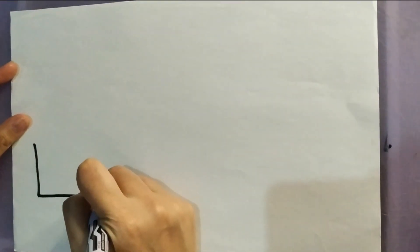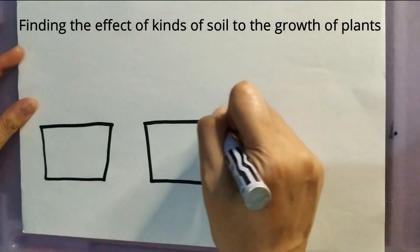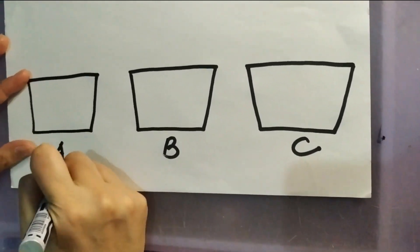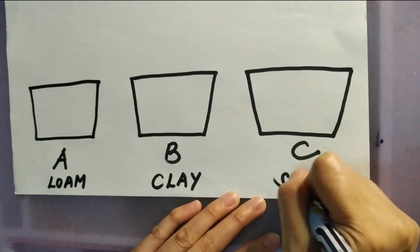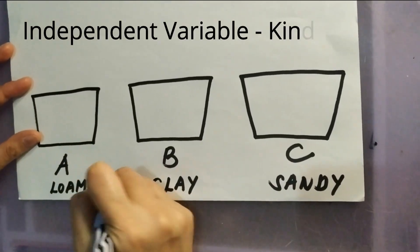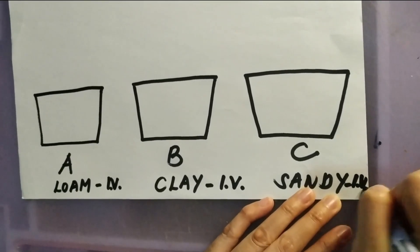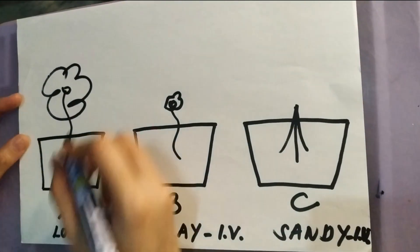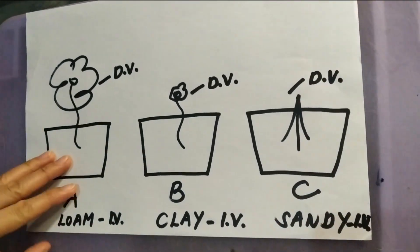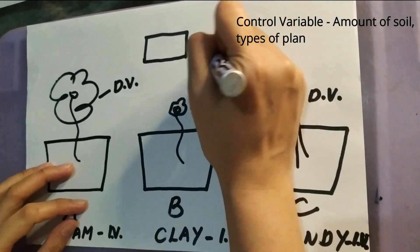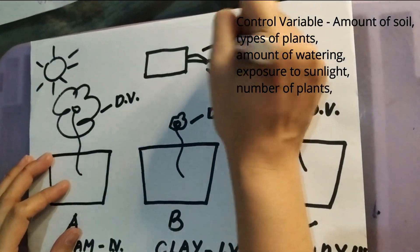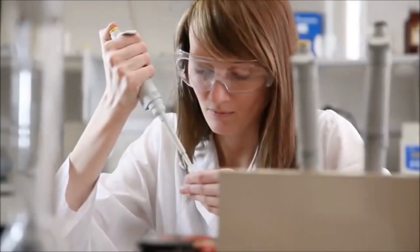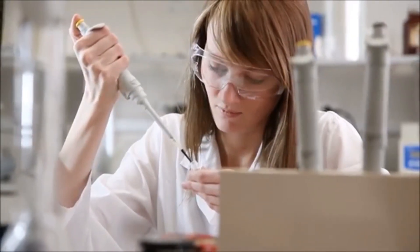For example, our problem is finding the effect of kinds of soil on the growth of plants. In our experiment, we will use three setups: A for loam soil, B for clay soil, and C for sandy soil. These are the independent variables because they are the factors we change to test the experiment. The growth of the plant is the dependent variable, or responding variable, because it is the effect of the change in the independent variable. The amount of water, same exposure to sunlight, amount of soil, same type and number of plants, and same size of container are the control variables, because these are the factors that must remain the same throughout the experiment to get accurate results.